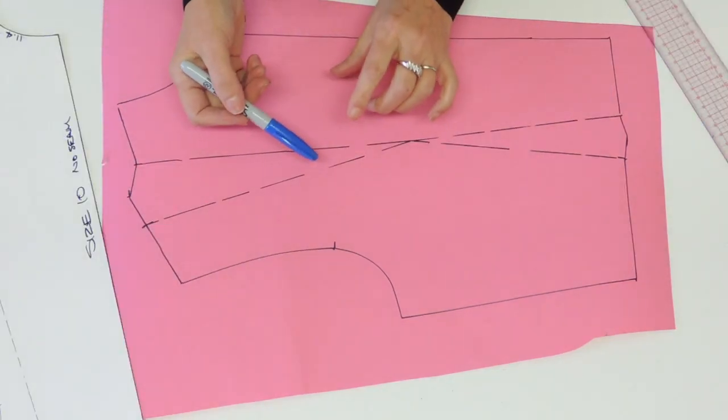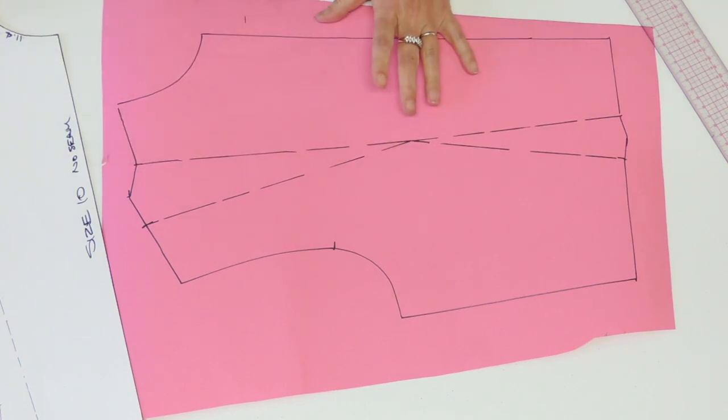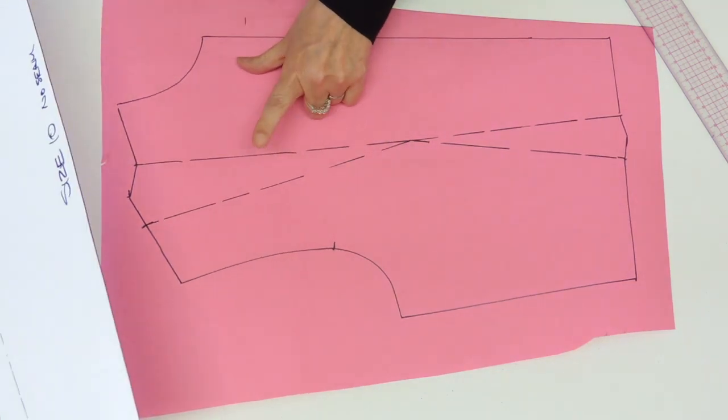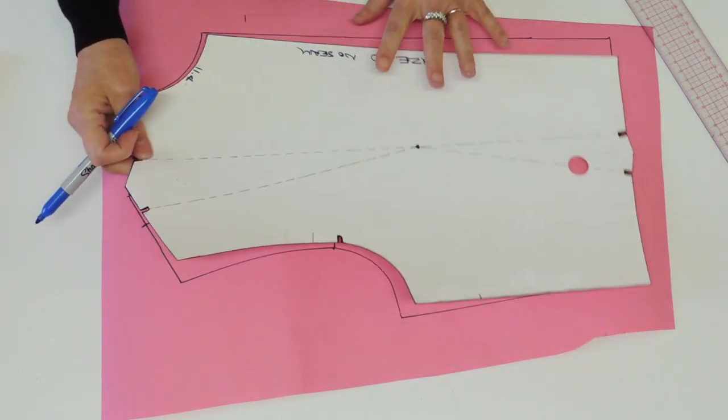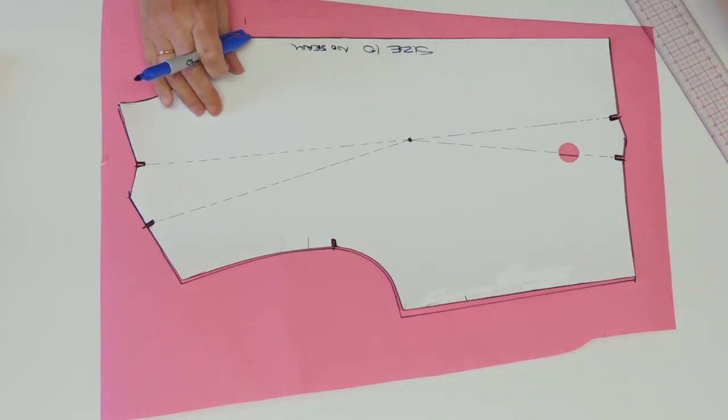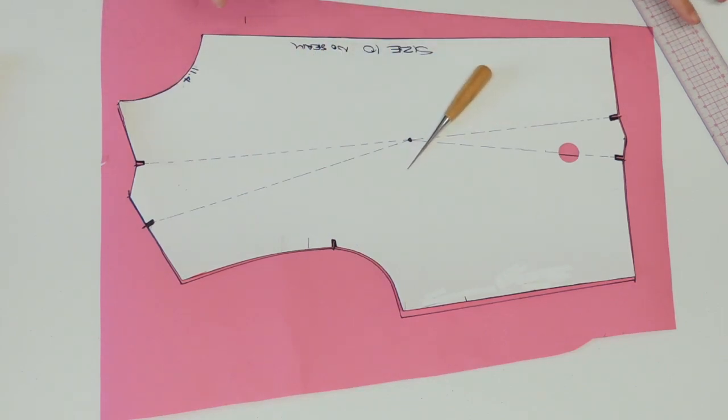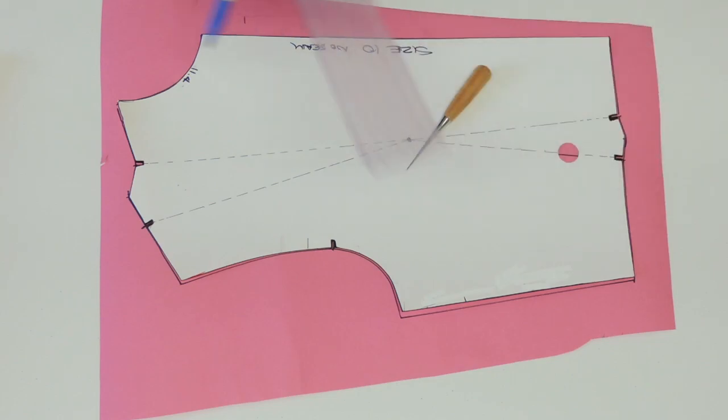So I'm now going to use the blue one so you could see the difference between the two of them and where did the shoulder dart went. So I'm going to put back the block right on at the original position and I'm going to start distributing the shoulder dart.